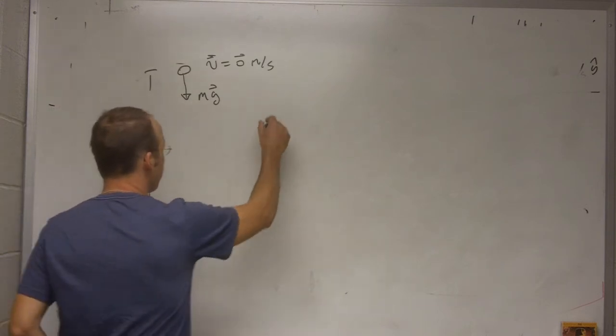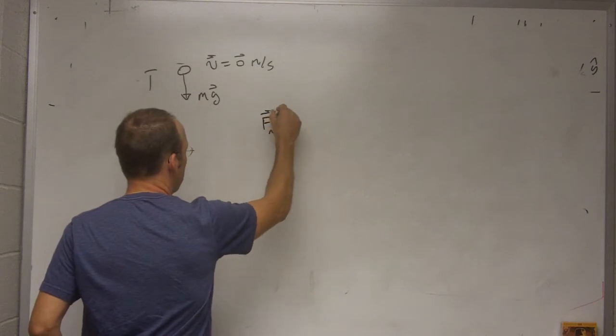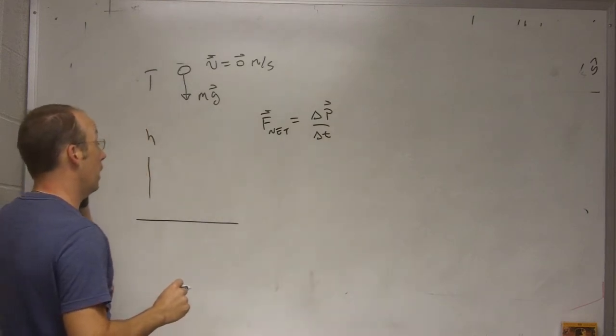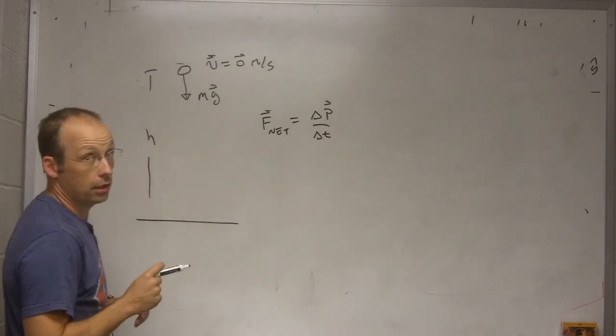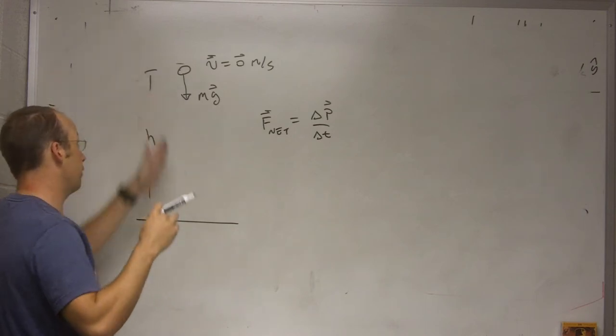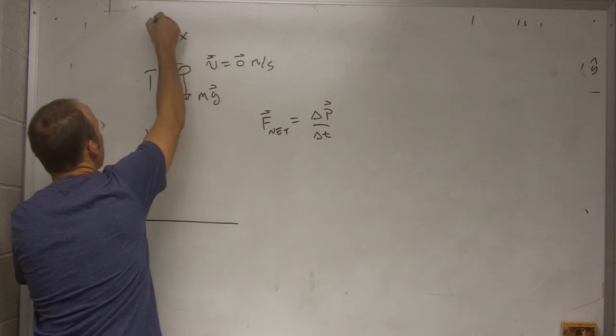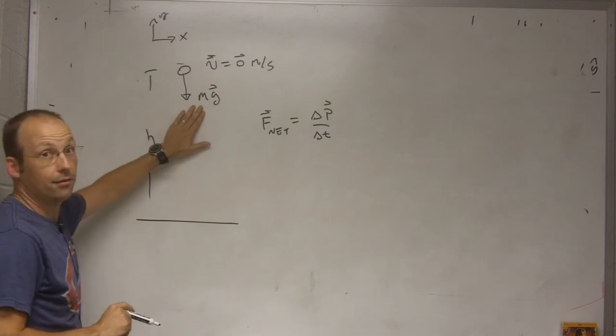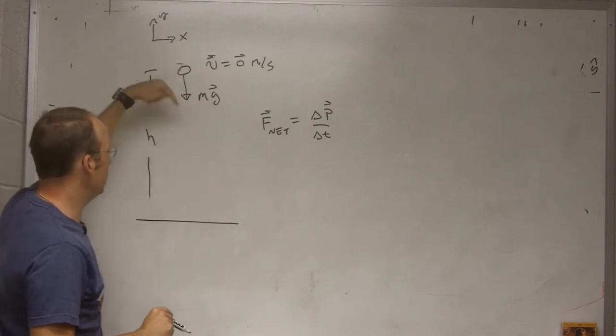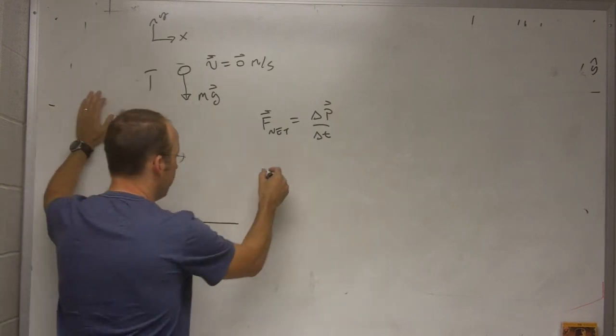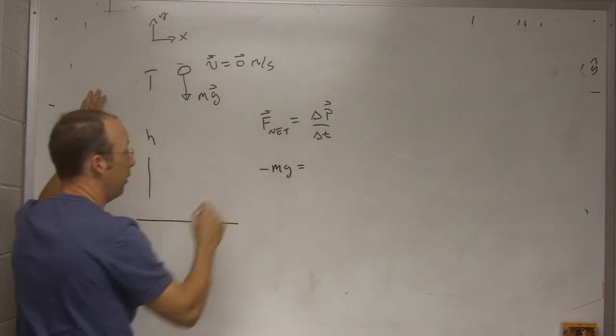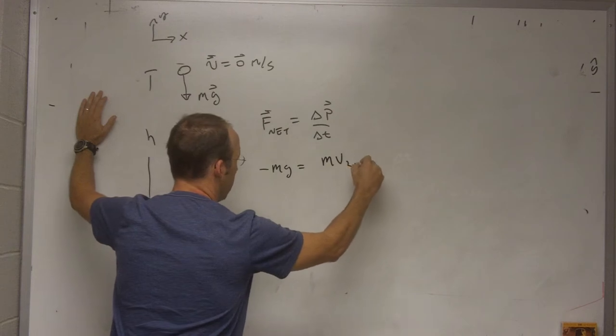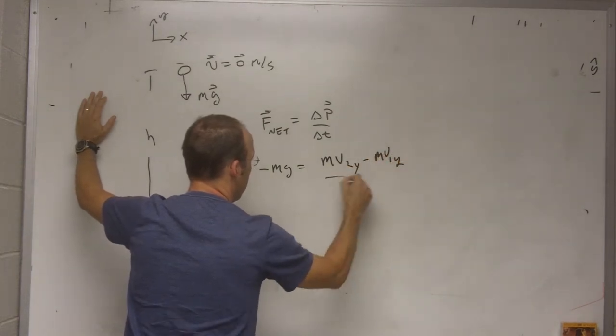So let me write down the momentum principle. F_net equals change in momentum over change in time. Okay, and what force do I have on there? It's just mg. So let me now, this is clearly just a one dimensional problem, x, y. So let me write this in the y direction. In the y direction, what's the net force? It's negative mg, right? Because g is now, that's the vector g which is down. But in the y direction, that'd be a negative sign. So negative mg. Now the change in momentum is going to be mv_2y minus mv_1y over delta t.